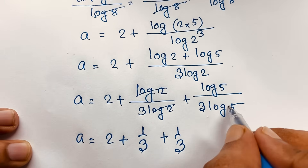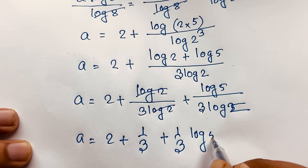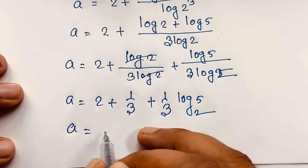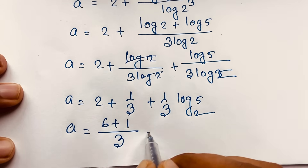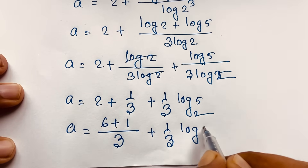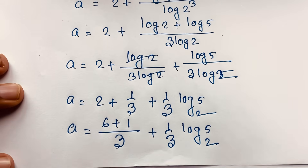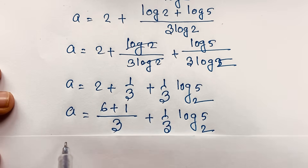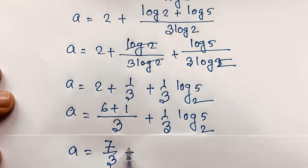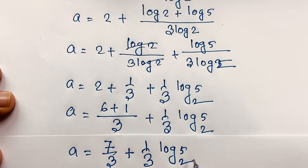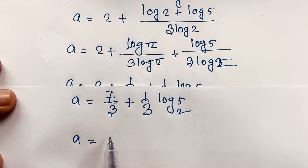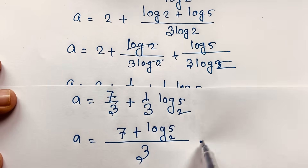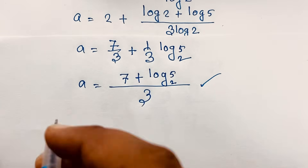The log2/log2 terms cancel, giving 1/3. The term log5/(3·log2) becomes (1/3)·log₂5. Finding the least common denominator of 3: a = 2 + 1/3 + (1/3)·log₂5 = 7/3 + (1/3)·log₂5. This is our final answer.